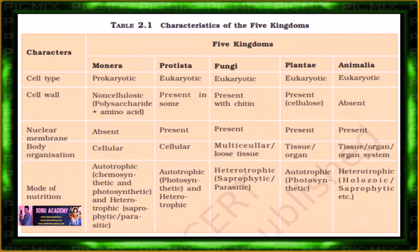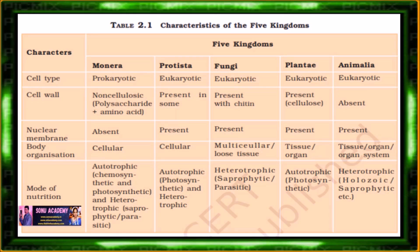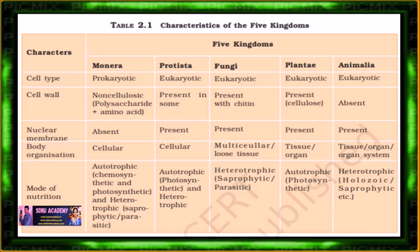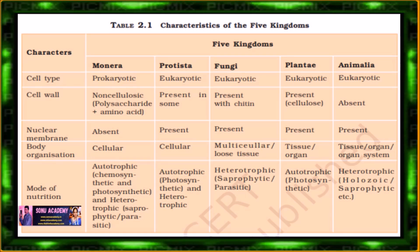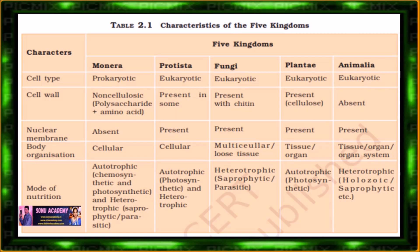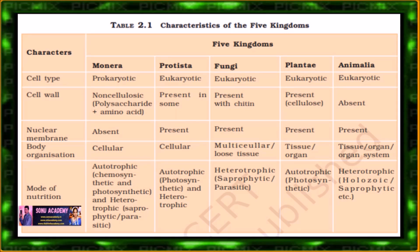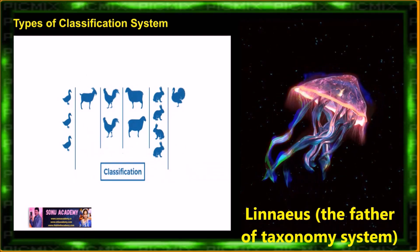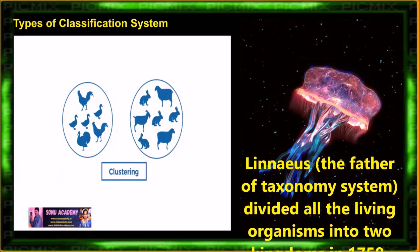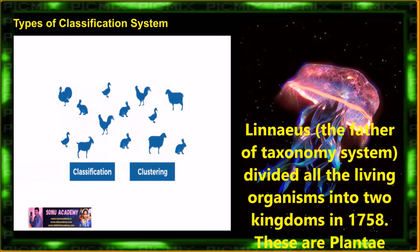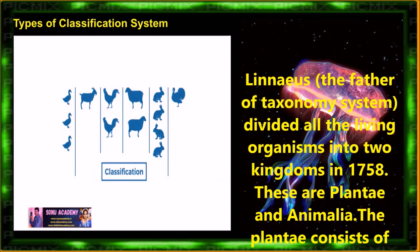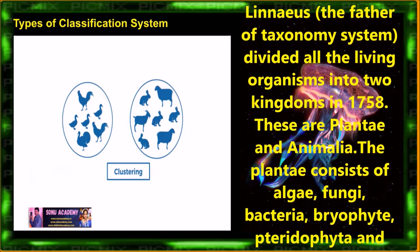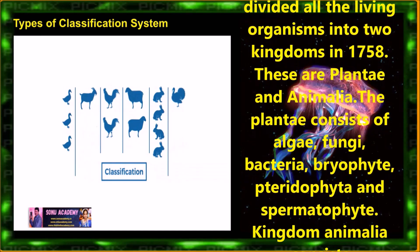Children, based on the uses, classification can be divided into five types. The types of classification depend upon the system used. First, they introduced the two kingdom classification system, which was introduced by Linnaeus, who was the father of taxonomy. He divided all living organisms into two kingdoms in 1758 — Plantae and Animalia.